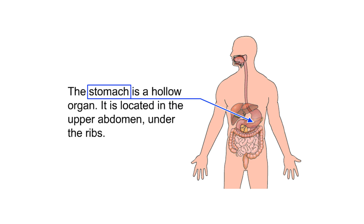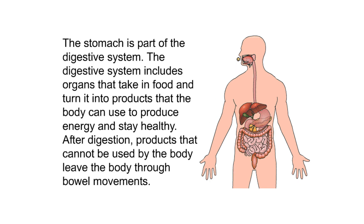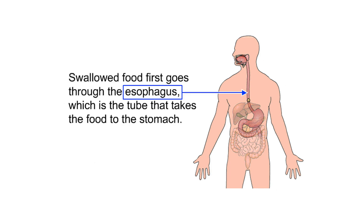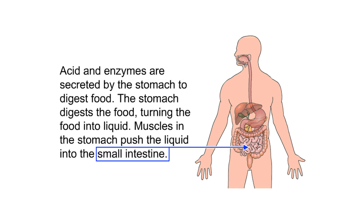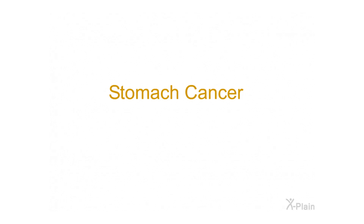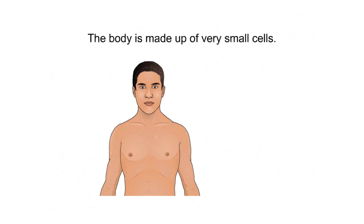The stomach is a hollow organ located in the upper abdomen under the ribs. It is part of the digestive system, which includes organs that take in food and turn it into products the body can use to produce energy and stay healthy. After digestion, swallowed food goes through the esophagus to the stomach, where acid and enzymes digest food into liquid, which is then pushed into the small intestine.